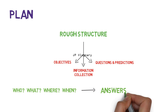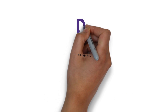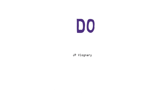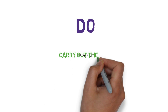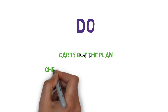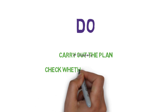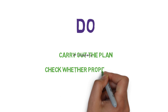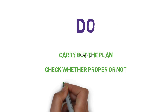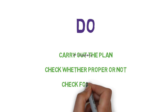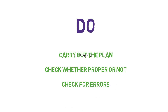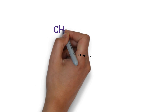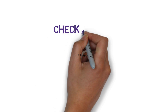The second phase is Do — carry out the plan and see whether it works properly without any problems or errors. The third phase is Check, or Study.